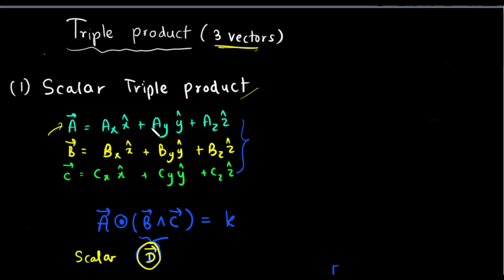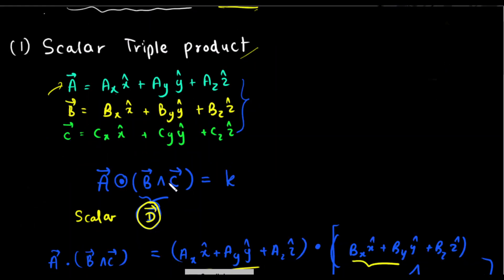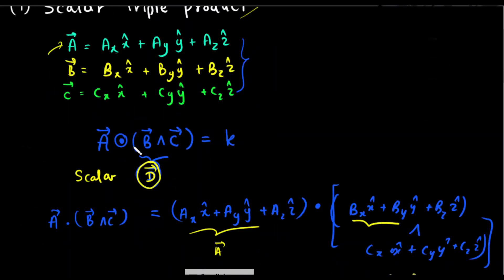We can write vector A in terms of x-hat, y-hat, and z-hat, where AX, AY, AZ are the vector components along x-hat, y-hat, and z-hat directions. Similarly, I can write B and C in terms of x-hat, y-hat, and z-hat. Now I'm going to define the scalar triple product.